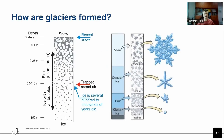How are glaciers formed? To have glaciers in a certain area, we need two things: cold temperatures and precipitation. Glaciers are formed from snow — we need snow falling on the ground that stays until the next year. During the melting period, snow starts transforming: first to granular ice, which is a form of firn.